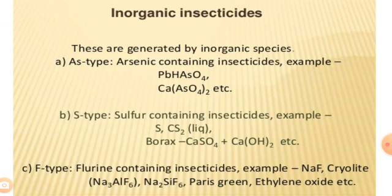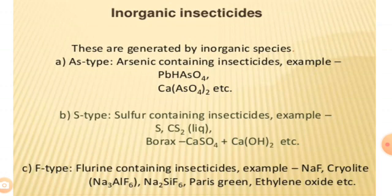The F-type inorganic insecticides contain fluorine-containing compounds. These include NaF (sodium fluoride), sodium fluoaluminate (Na3AlF6), Na2SiF6, Paris green, ethylene oxide, and cryolite. Sodium fluoride contains 45.2% of fluorine and is less soluble in water. It is used against cockroaches, chewing lice, and as a toxicant in poison baits.